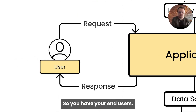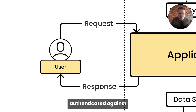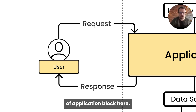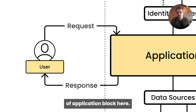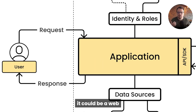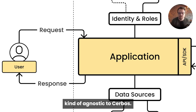So you have your end users. They are authenticated against your system. They're making requests to your API into this kind of application block here. And this application block could be a monolith. It could be a web or microservices. It could be an edge function, kind of agnostic to Cerbos.